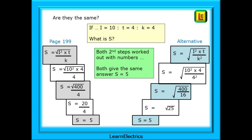But are they the same? We can find out by putting some numbers in and checking that the answer S is the same for both equations. If we make I equal to 10, T equal to 4, and K also equal to 4, then what is S? On the left is the formula as shown on page 199 of the Brown Book; on the right we show the alternative formula. Pause the video and follow the working out. We find that both formulas for S give the same answer: S equals 5. Try it with different numbers — the practice will help your understanding and confidence.